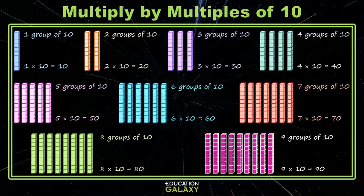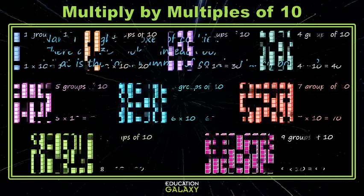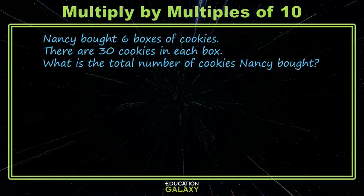So how might we apply some information like this? Let's take a look at an example. Here, Nancy bought six boxes of cookies. There are 30 cookies in each box, and we're looking for the total.